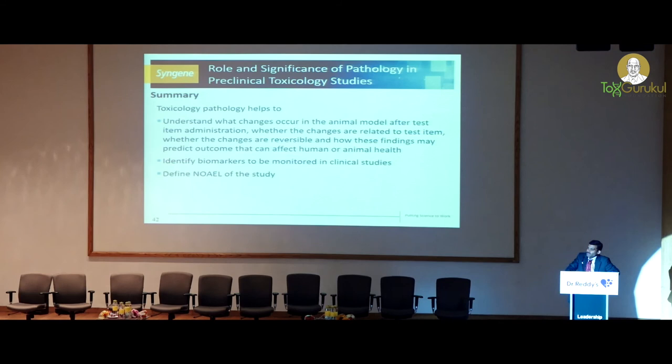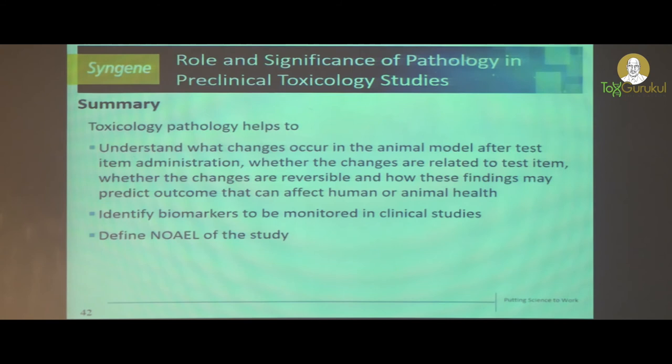Ultimately, pathology data helps toxicologists define the NOEL. The pathology data characterizes the toxicology-related findings and organ toxicity, and identifies up to what dose level findings are seen and whether they are adverse. It is up to the toxicologist to compile this data and compare it with in-life phase data to define the NOEL, which helps in deciding the dose for subsequent human clinical trials.